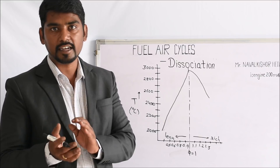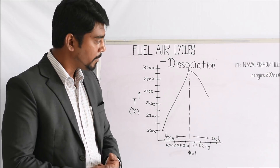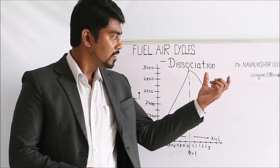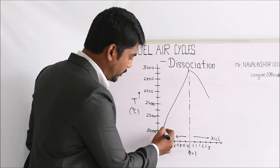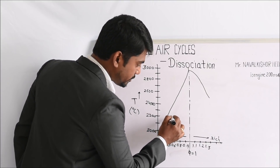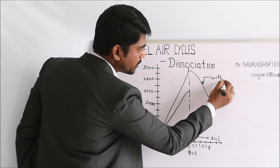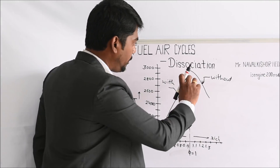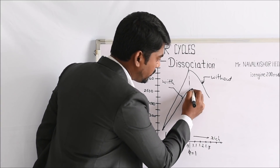When we consider dissociation — carbon monoxide and oxygen forming from carbon dioxide, and hydrogen and oxygen forming from water vapor — the dissociation process takes heat from the combustion. This means temperature drops at all those points as we move from stoichiometric to rich mixture. As the mixture becomes richer, the gap between the temperature without dissociation and with dissociation goes on increasing. This gap is highest at the stoichiometric ratio.